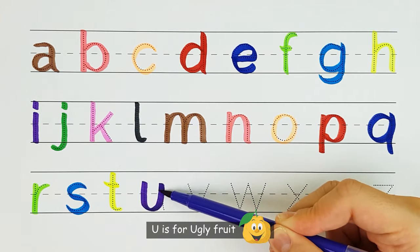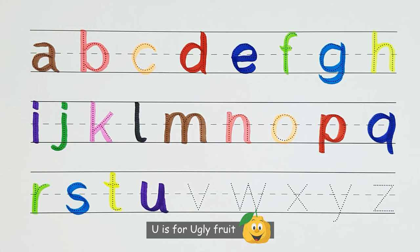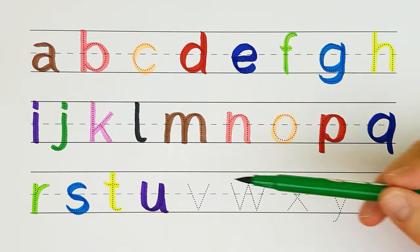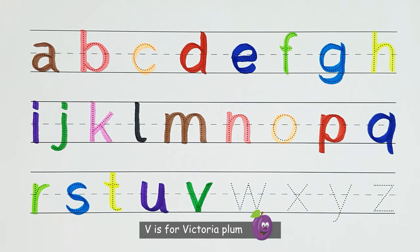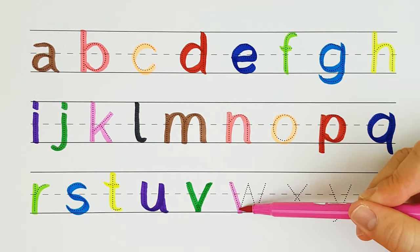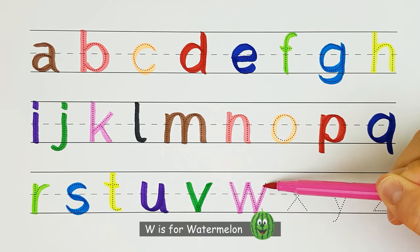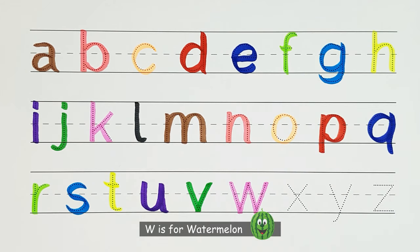U. U is for ugly fruit. U. V. V is for Victoria plum. V. W. W is for watermelon. W.